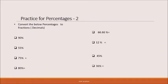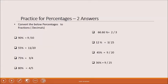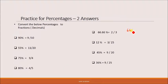Convert the below percentages to fractions. So 90 by 100 is 9 by 10 - and 0.9 - that is the answer. Pause the video, do the problem, then in the next slide you have the answers. So 55 by 100 is 11 by 20. 75 by 100 is 3 by 4. 80 by 100 is 4 by 5. 66.66% - that is the answer - 66.66.